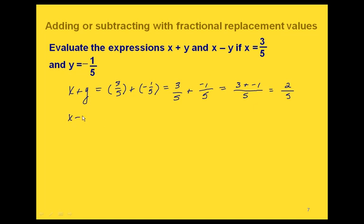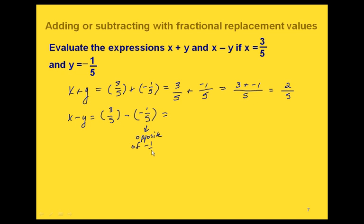Now for our other expression, we replace x with 3 fifths and y with negative 1 fifth. Remember, we can change a subtraction into the addition of an opposite — the opposite of negative 1 fifth is just 1 fifth. So we rewrite this as 3 fifths plus 1 fifth. Notice how that got rid of all the negatives. Now again we have like fractions, both with a denominator of 5, so that's our new denominator. On the top we're just adding 3 and 1 to get 4 fifths.